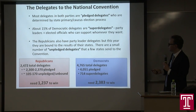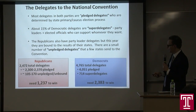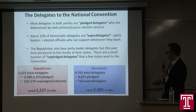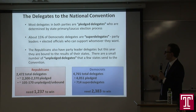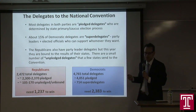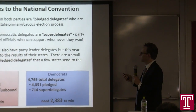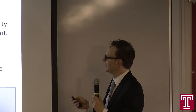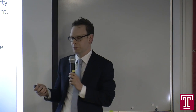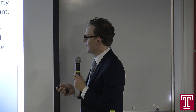On the Democratic side, about 15% — 714 of their total — are called superdelegates. That doesn't mean they can fly or have special vision. It means they are party leaders and elected officials who are Democrats, and they are free to support whoever they want. Pledged delegates are bound to a candidate based on election results, but superdelegates can support whoever they want — they can say today they support Clinton and tomorrow switch to Sanders. It's only at the convention that they must officially cast their vote.